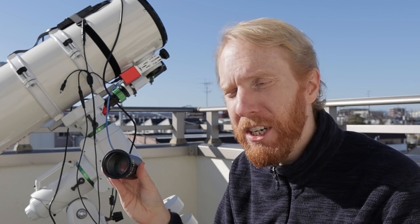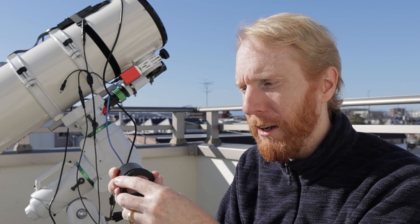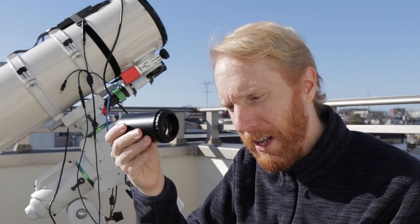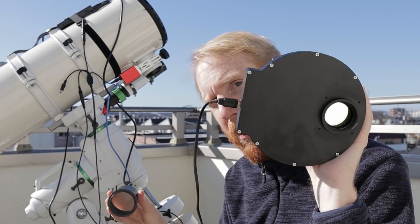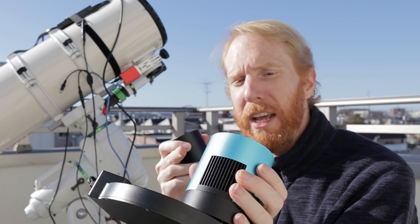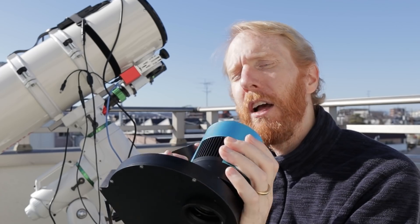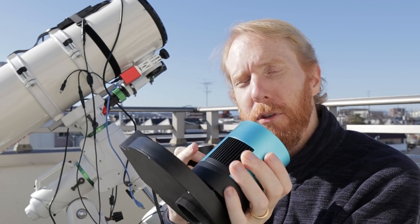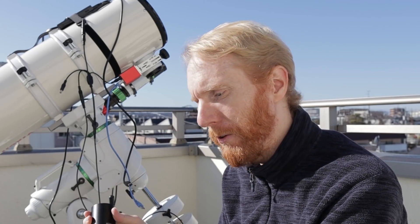Also, the threads at the top of this focal reducer are M48, they're not M42 or T threads. So for me, because I use an M42 imaging train overall, I had to use an M48 to M42 adapter because I wanted to use it originally with a monochrome camera and filter wheel. Now here on my filter wheel I actually have a color camera, so I'll just be setting the filter to my Lumens filter UV-IR cut filter, taking sub frames, and then I'll show you what the result is.